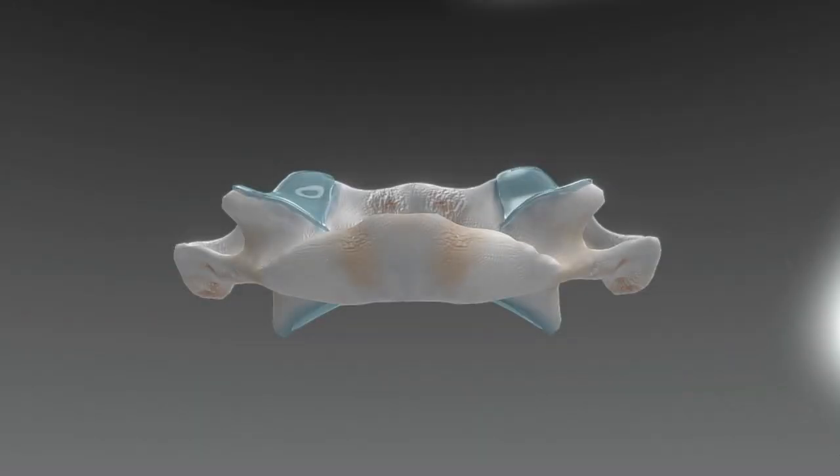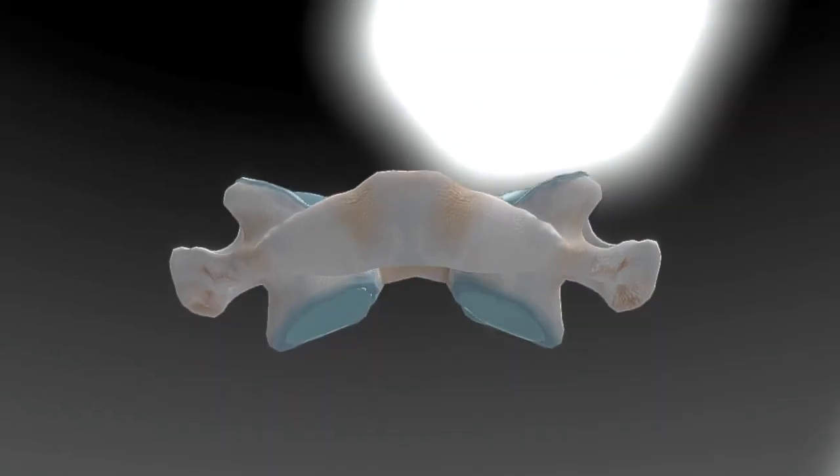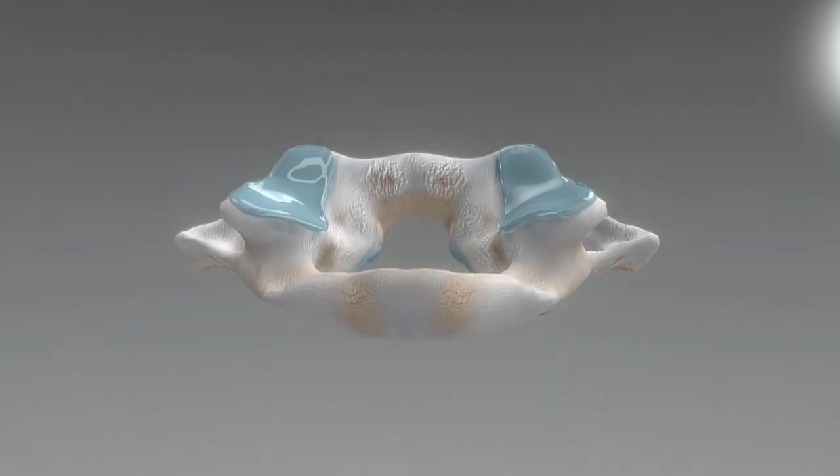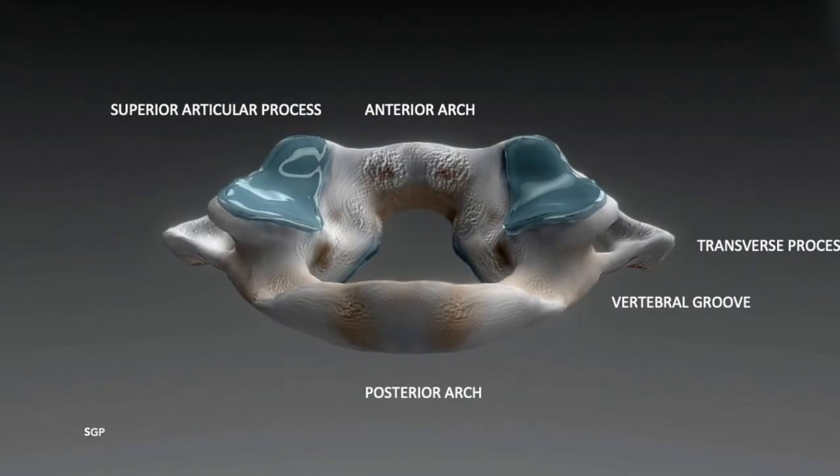Atlas is a peculiar bone in that it does not have any body. In this image we can see that Atlas is a circular bone with its ring being divided into 5 parts for convenience.